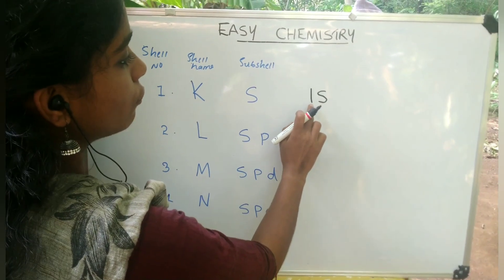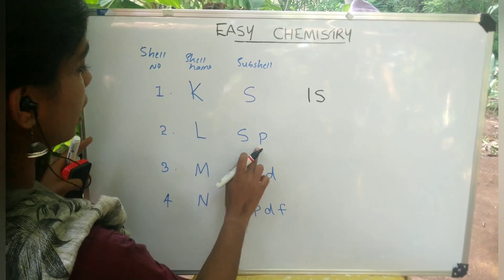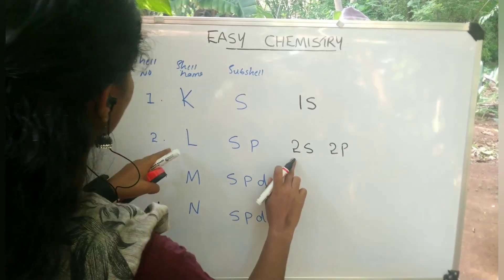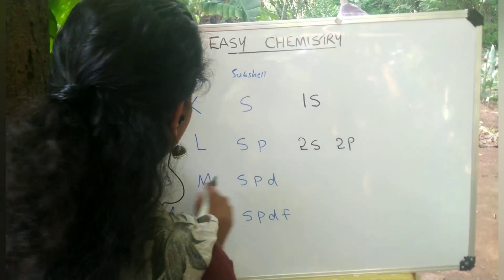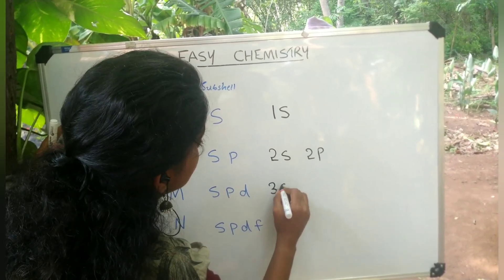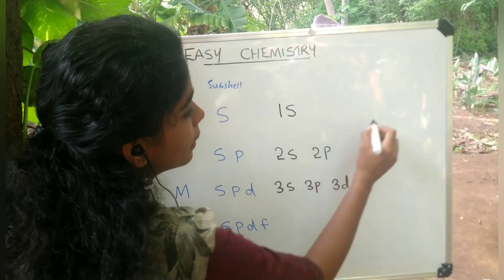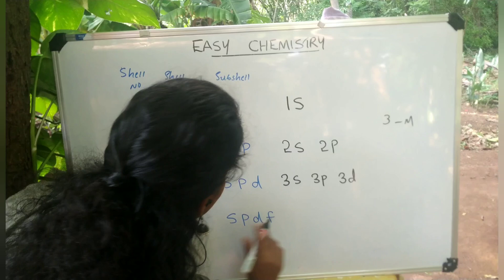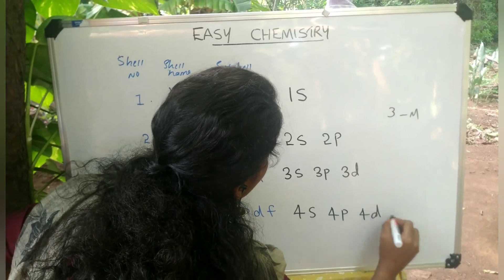The notation is 1s for the first shell. The second shell gives us 2s and 2p. The third shell gives us 3s, 3p, and 3d — that is the M shell. The fourth shell gives us 4s, 4p, 4d, and 4f.